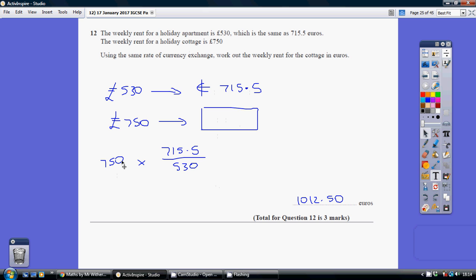So in order to get a bigger number, I need to make sure the bigger of these two numbers is on top. So it's your 750 times this one and divide by that one. Pop that into your calculator and you get this number of euros, and that is bigger than the 750 pounds.